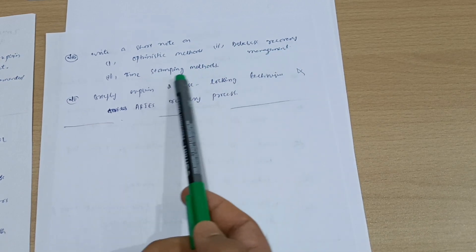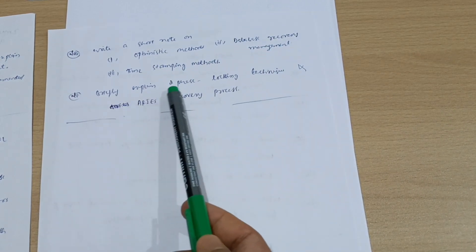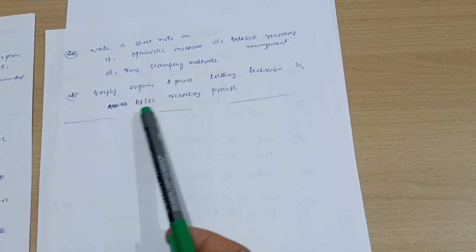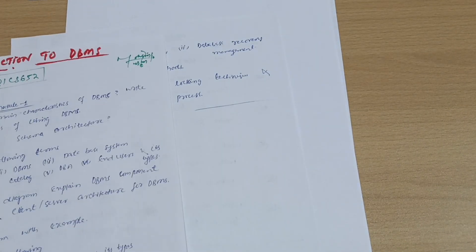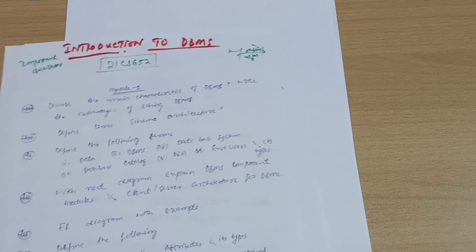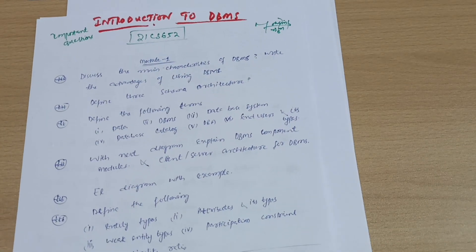Write a short note on: optimistic methods, database recovery management, time stamping methods. Explain briefly two-phase locking technique and ARIES recovery process. These are super important questions for Introduction to DBMS. Make sure you go through these questions with utmost priority so that you can pass the subject with ease.